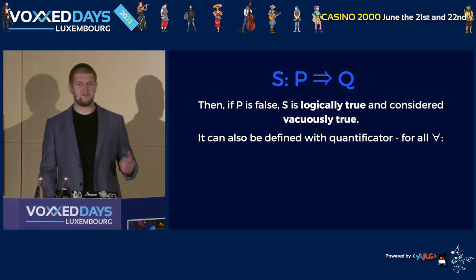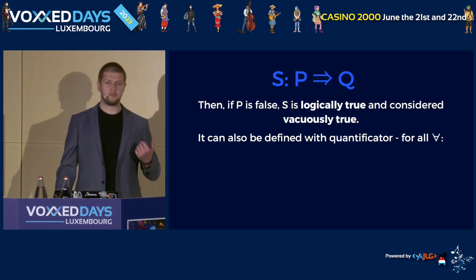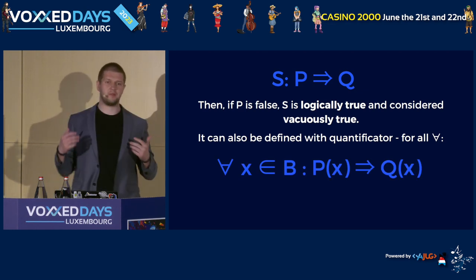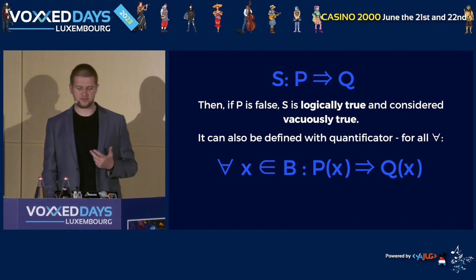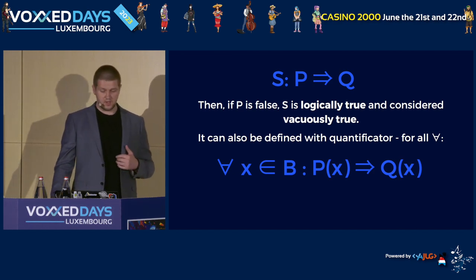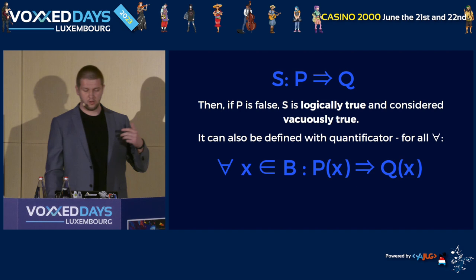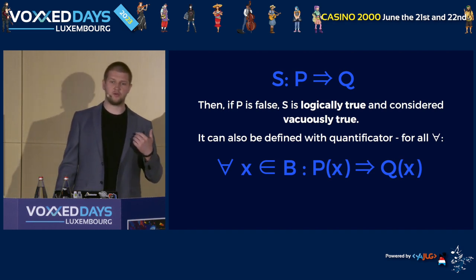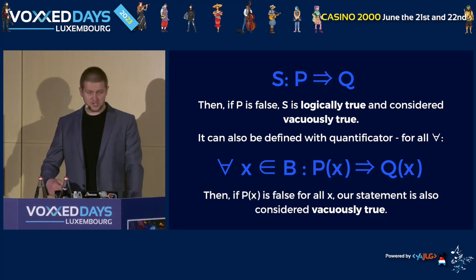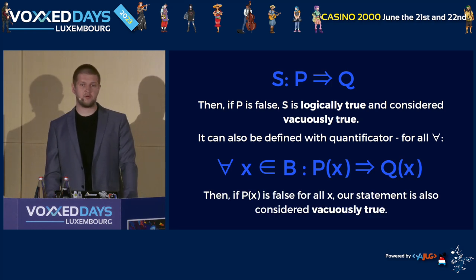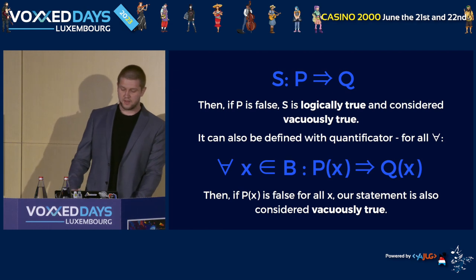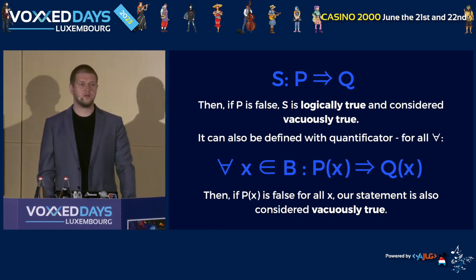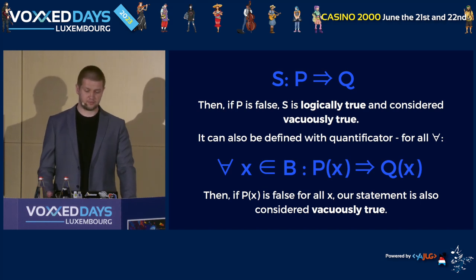We can also define this concept with the use of the for-all quantifier — that strange reversed A you probably know from your mathematical lectures at university. In such case, we read it as: for all elements X of a set B, if P(x) then Q(x). Additionally, if P is false for all the Xs, then our statement is also considered vacuous truth and is evaluated as logical truth.